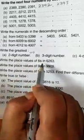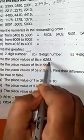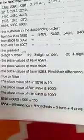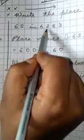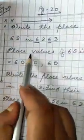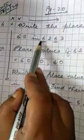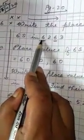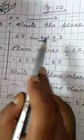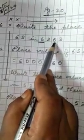Write the place values of 6 in 6263. Here 2, 6 given. Both place value you have to write here. Place values of 6 in 6263. First 6 is written in 1000 place. And second one is written in 10th place.